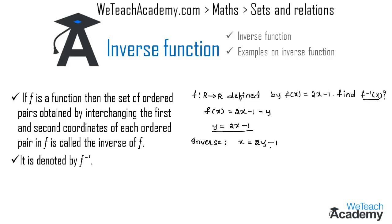Transferring minus 1 to the other side, we get 2y = x plus 1, and transferring 2 to the right-hand side we get y = (x plus 1) divided by 2. So f inverse of x is (x + 1) / 2.